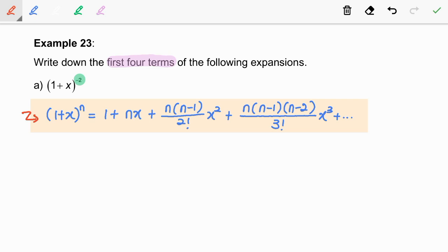Now, let us find x and n by comparing 1 plus x to the power of negative 2 with 1 plus x to the power of n. We clearly see that x is equal to x, and n is negative 2. Now, let us substitute x and n into the binomial formula.